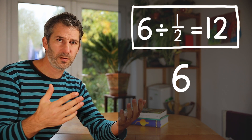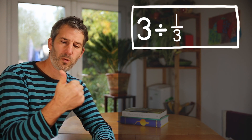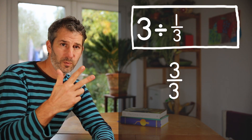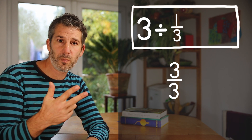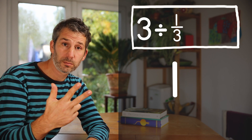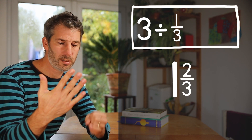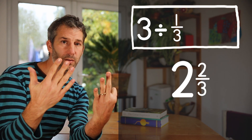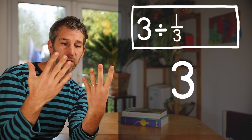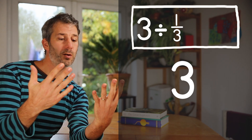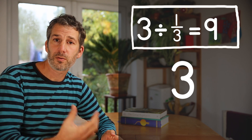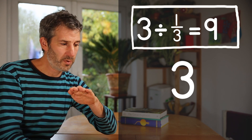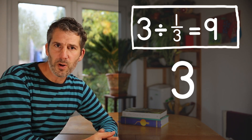Essentially, we just multiplied 6 by 2. What about 3 divided by a third? We count up in thirds until we get to 3: 1 third, 2 thirds, 1 whole — because 3 thirds is the same as 1 — then 1 and 1 third, 1 and 2 thirds, 2, then 2 and 1 third, 2 and 2 thirds, and then we're up to 3. So you could fit 9 thirds into 3 — 3 divided by a third is 9. Effectively, what we did was multiply by 3, because the denominator was 3.